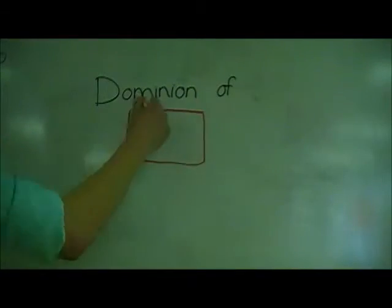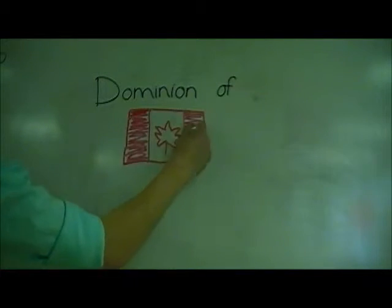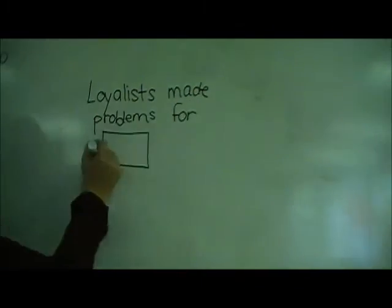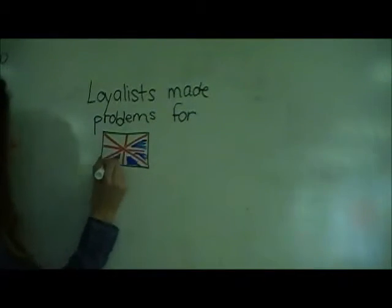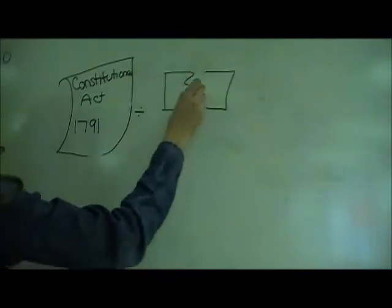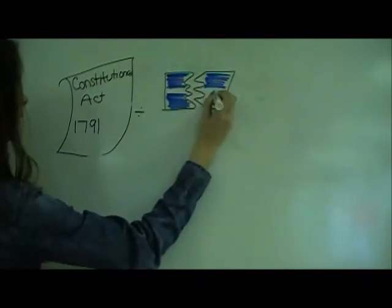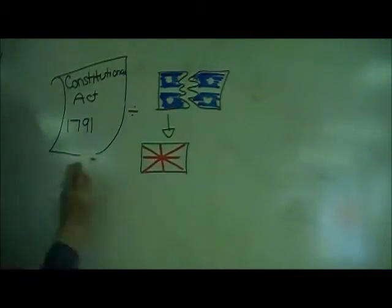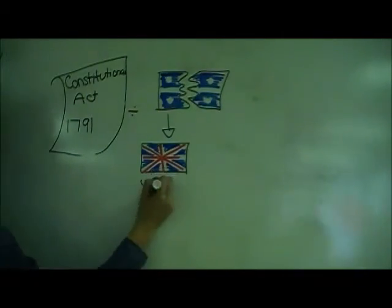The Dominion of Canada would not be formed until 1867. The Loyalists made problems for the British government. The Constitutional Act divided Quebec into two parts: Upper Canada, which was ruled by the British, and Lower Canada, which was ruled by the French.